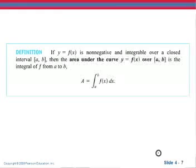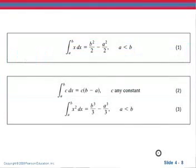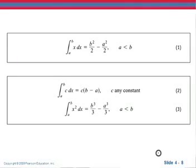If y equals f of x is non-negative and integrable over a closed interval from a to b, then the area under the curve y equals f of x over a to b is the integral of f from a to b — that is, the area equals the integral from a to b of f of x dx. Here are some formulas: the integral from a to b of x dx equals b squared over two minus a squared over two; the integral from a to b of c dx equals c times b minus a; and the integral from a to b of x squared dx is b cubed over three minus a cubed over three. Note that a is less than b.